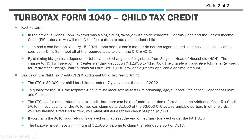So how does this change everything? By claiming his son as a dependent, it's going to change John's return in a couple of areas. One big one is his filing status — so far John has been a single filing taxpayer — and by being able to claim a dependent, it changes his filing status to head of household. That's nice for John because it gives him a greater standard deduction, increasing it from $12,950 to $19,400, which lowers his taxable income and will lower his ultimate tax liability.